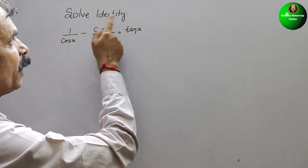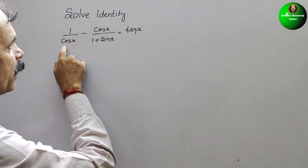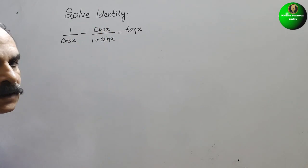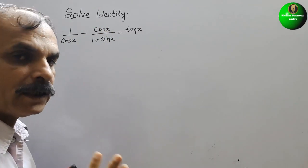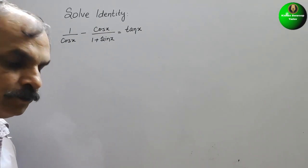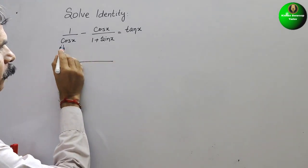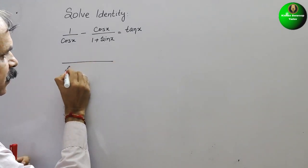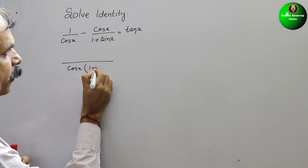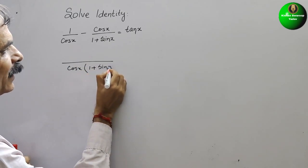The question is to solve the identity. What is given is 1/cos x minus cos x/(1 + sin x). We will take the LCM, which will be cos x times (1 + sin x).